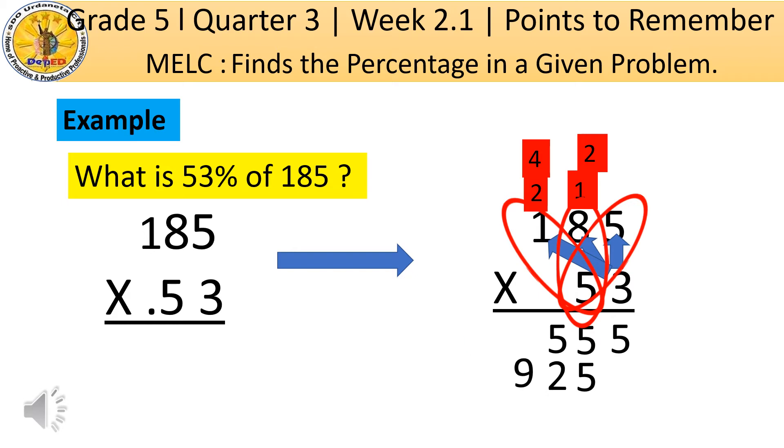Then let us add. Bring down 5. Then 5 plus 5 is 10. Regroup 1 to the next upper digit. Then 5 plus 2 is 7 plus 1 equals 8. Then bring down 9.